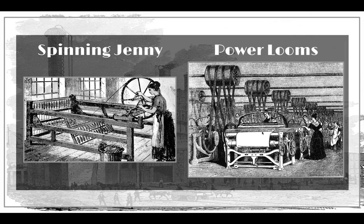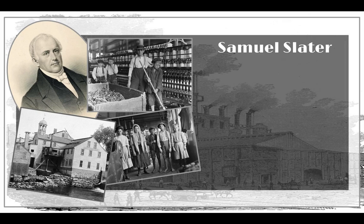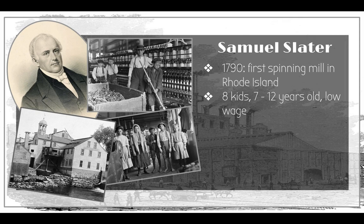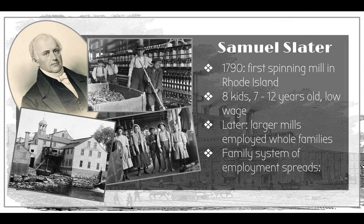Here we have some examples of New England factories. You can see they're built on water because water was their power source, and this gives you an idea of what it looked like on the inside. Samuel Slater — 'Slater the Traitor' — in 1790 built the very first spinning mill in Rhode Island. He employed mostly children: eight kids between the ages of seven to twelve, who were paid very little. Later, Slater would move to build larger mills that employed a whole family — mom, dad, and children all working in the same large mill. This family system of employment expanded from Rhode Island to Connecticut to Massachusetts.